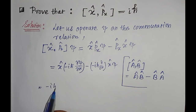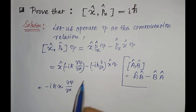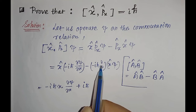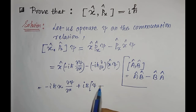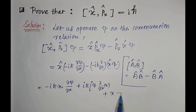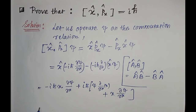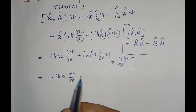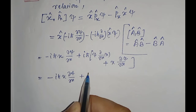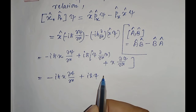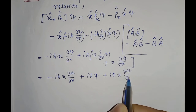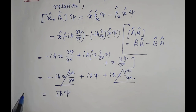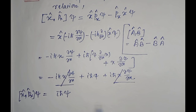In the next step, we can write minus iℏ x (∂ψ/∂x), and then plus iℏ times (∂/∂x)(xψ), which expands as ψ + x(∂ψ/∂x). The x(∂ψ/∂x) terms cancel, so we get iℏψ. Therefore [x, px]ψ = iℏψ.